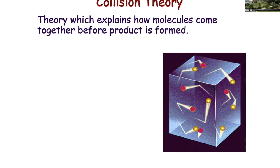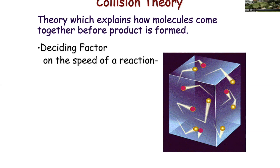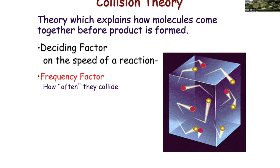In order to study kinetics correctly, we have to look at collision theory, because these things have to collide with themselves in order for bonds to break and new bonds to form. Collision theory basically says that the deciding factors of the speed of the reaction depend on how frequently they collide. If they collide a lot, you get a faster reaction; if they don't collide as much, you get a slower reaction.